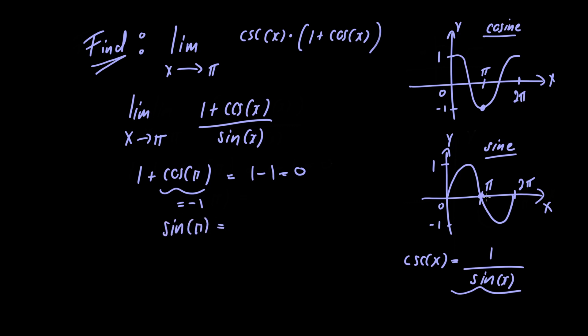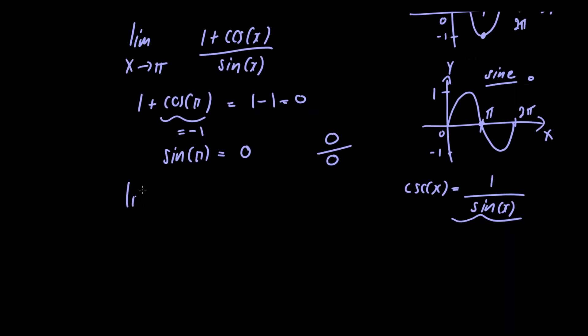We can see that from this graph right here. The limit's of the form 0 over 0, so in order to solve this limit we're going to have to use L'Hôpital's rule. So we're going to have the limit as x approaches π and we're going to take the derivative of the numerator and the derivative of the denominator.